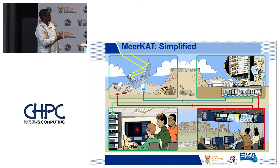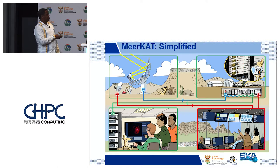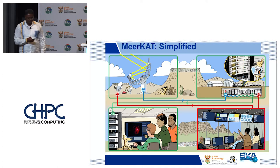One element you don't see is the operators. The operators and the astronomer on duty get given what to observe. They prepare the telescope, observe, and trigger the whole pipeline. It gets qualified and results are produced — they are the triggers and finishers of the process.